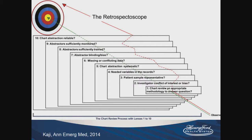The analogy I thought of when we were creating this diagram is the game from elementary school — whisper down the lane, or telephone. Each time you go through a layer, you're adding another level of bias, which takes you away from the truth.